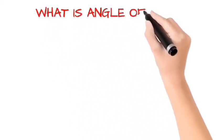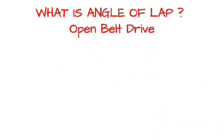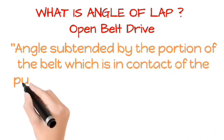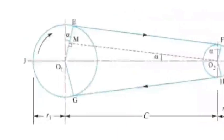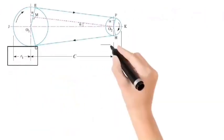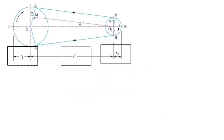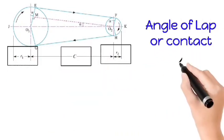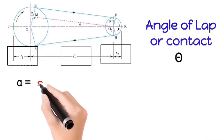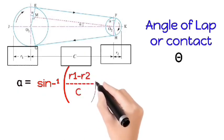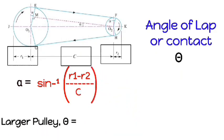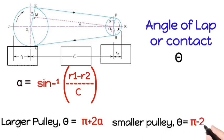What is the angle of lap? Open drive. Angle subtended by the portion of the belt which is in contact of the pulley surface at the center of the pulley, denoted by theta. Larger pulley radius, smaller pulley radius, distance between centers. Angle of lap or contact theta: alpha is equal to sin inverse of r1 minus r2 upon c. Larger pulley theta is equal to pi plus 2 alpha. Smaller pulley theta is equal to pi minus 2 alpha.